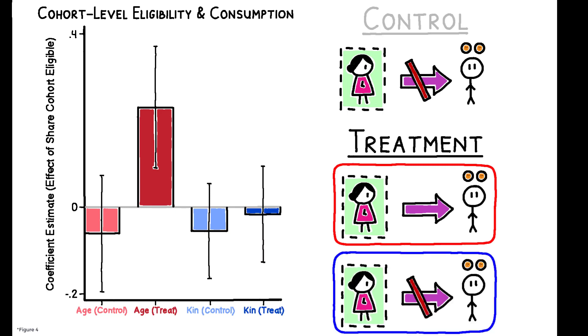On average, every treated cohort member in an age-set society increases consumption spending for members of the spillover group by 23 U.S. dollars, which corresponds to 13% of the size of the transfer and 8% of median local income.